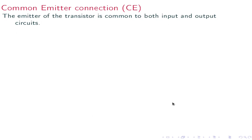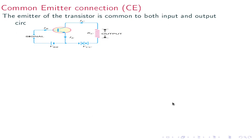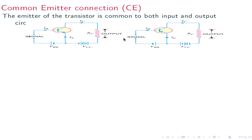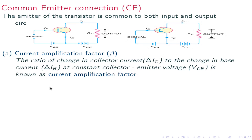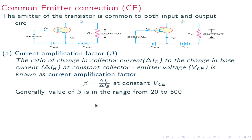In the common emitter connection, the emitter is common to both input and output. Here is the NPN circuit and the PNP circuit. The current amplification factor beta equals delta Ic divided by delta Ib at constant Vce. Its value is in the range of 20 to 500.